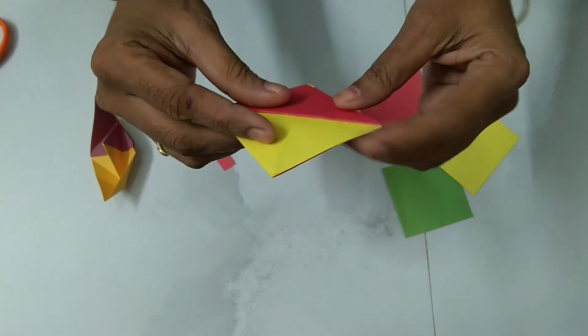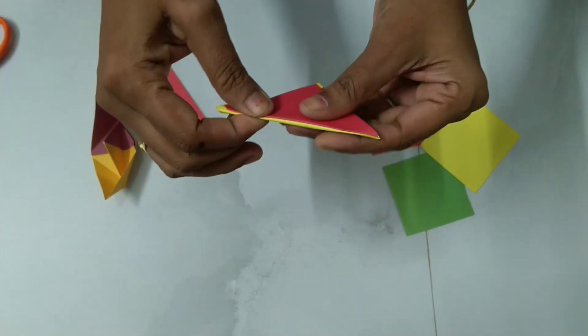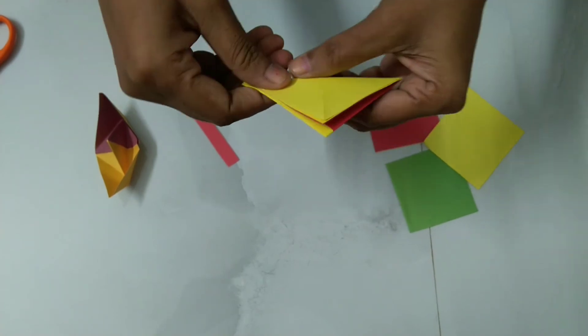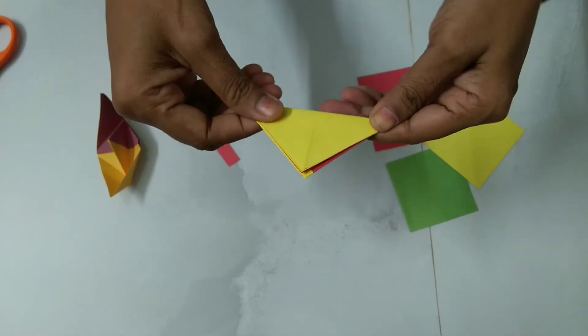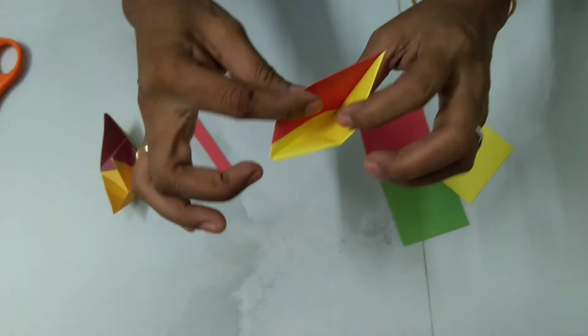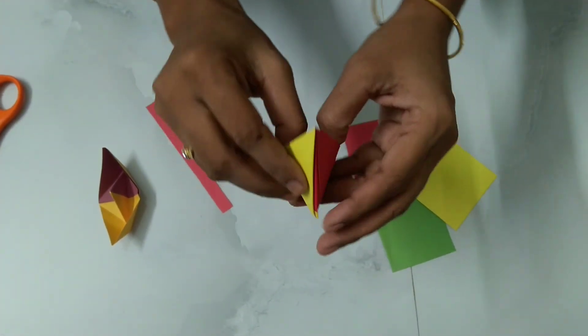Now remaining three folds, you have to fold opposite, at the opposite side. When you will fold it and you will open from inside, you will get like this cone or cap shape.